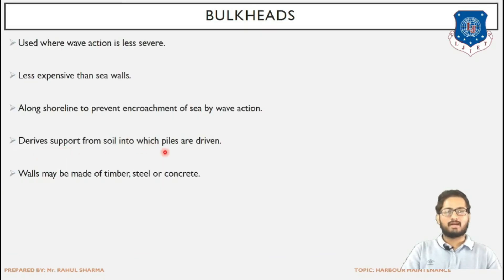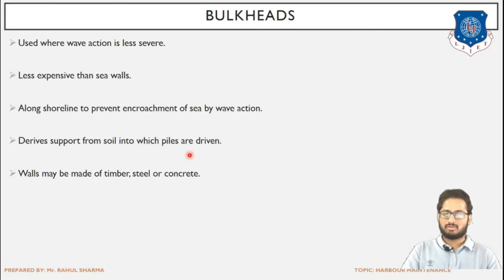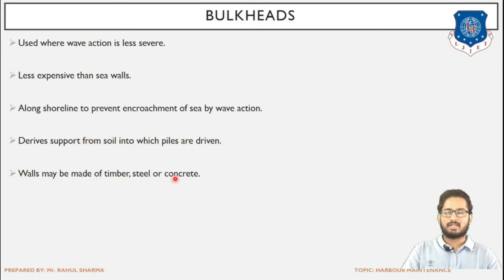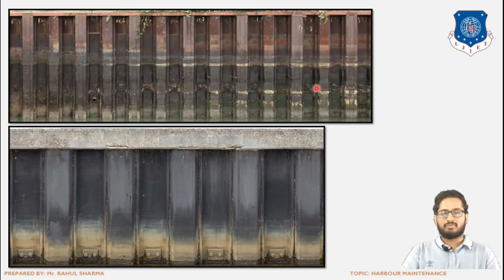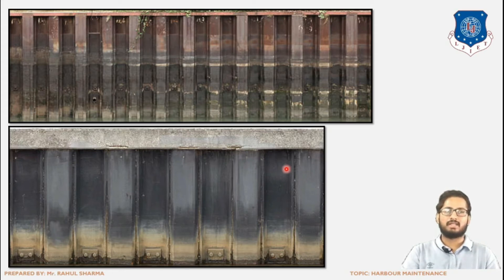Bulkheads derive support from the soil into which piles are driven — the end-bearing piles pass the load to the soil, which is the seabed supporting this vertical structure. Walls can be made of timber, steel, or concrete, but mostly steel is used and next to it timber. Rubbles are also placed as a measure to mitigate the impact of the waves. These bulkheads have a vertical structure which retains the land on one side, with water on the lower level on the other side, ensuring no erosion of the land portion takes place.